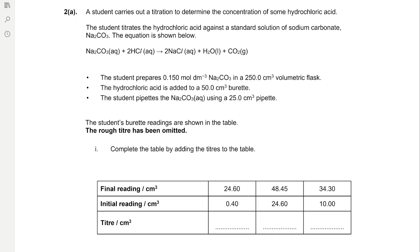A student carries out titration to determine the concentration of some hydrochloric acid. The student titrates the hydrochloric acid against a standard solution of sodium carbonate Na2CO3. The equation is shown below. We've got sodium carbonate reacting with 2 moles of hydrochloric acid to form 2 moles of sodium chloride, water, and carbon dioxide gas.